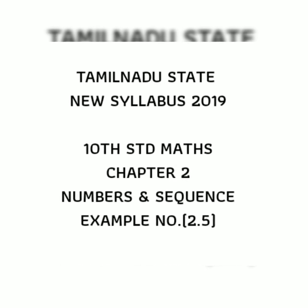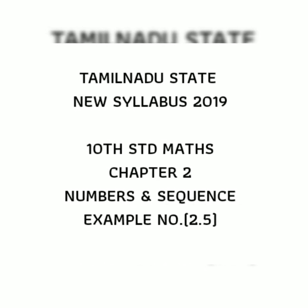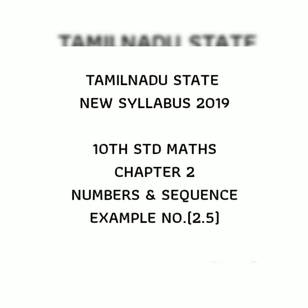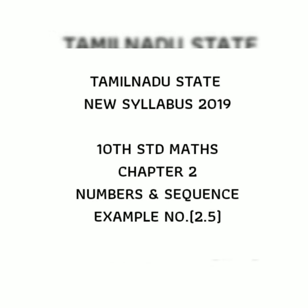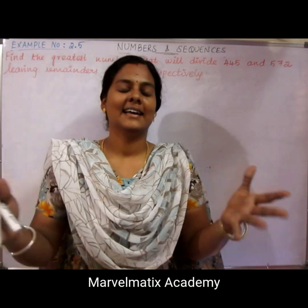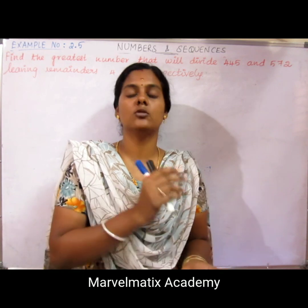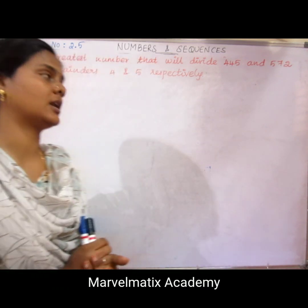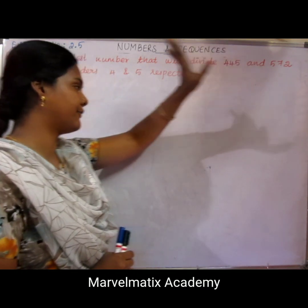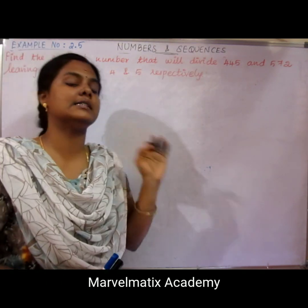Let's take a look at Example number 2.5. The question is: find the greatest number that will divide 445 and 572, leaving remainders 4 and 5 respectively.